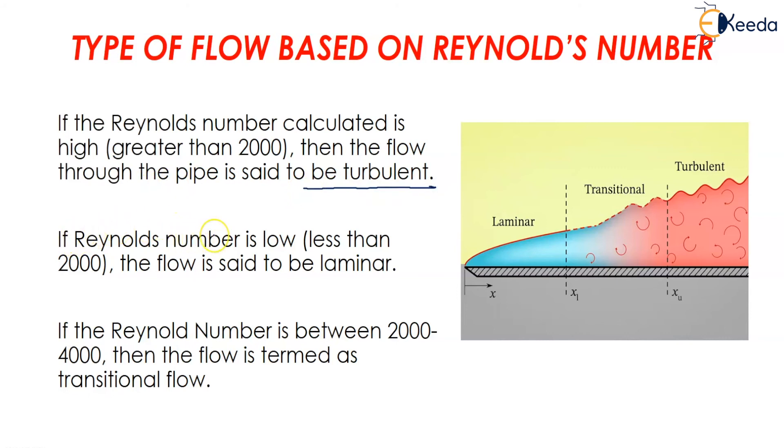If the Reynolds number is low that is less than 2000 the flow is said to be laminar. If the Reynolds number is between 2000 to 4000 the flow is said to be a transition flow.